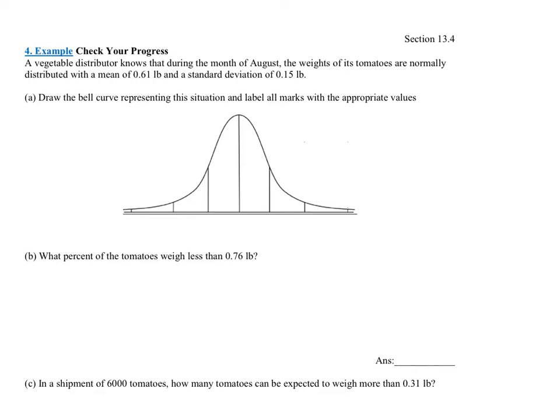Example four, check your progress. Again, a normal distribution problem. It says a vegetable distributor knows that during the month of August, the weights of tomatoes are normally distributed with a mean of 0.61 pounds and a standard deviation of 0.15 pounds.